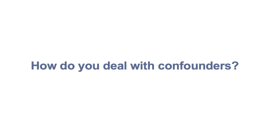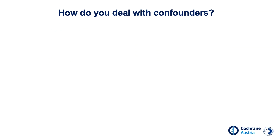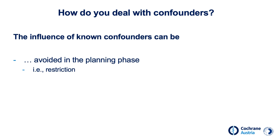How do you deal with confounders? You can get a grip on confounders that you know in advance. In the planning phase, for example, the inclusion criteria of a study are defined so narrowly that the influence of confounders is eliminated. This procedure is called restriction.